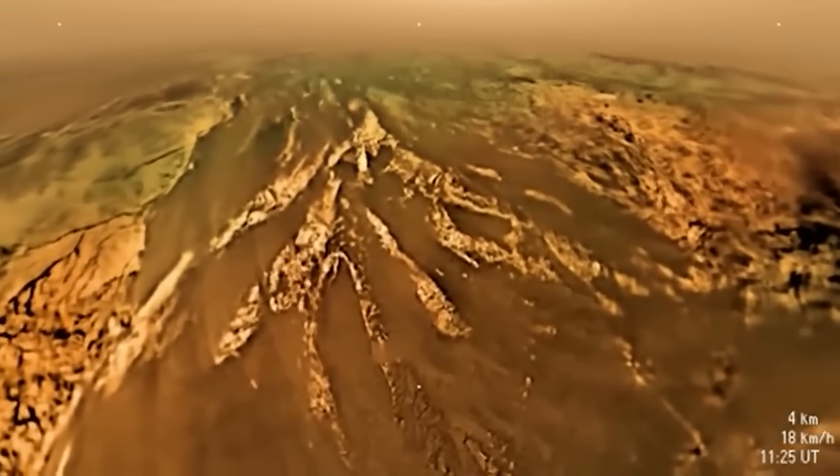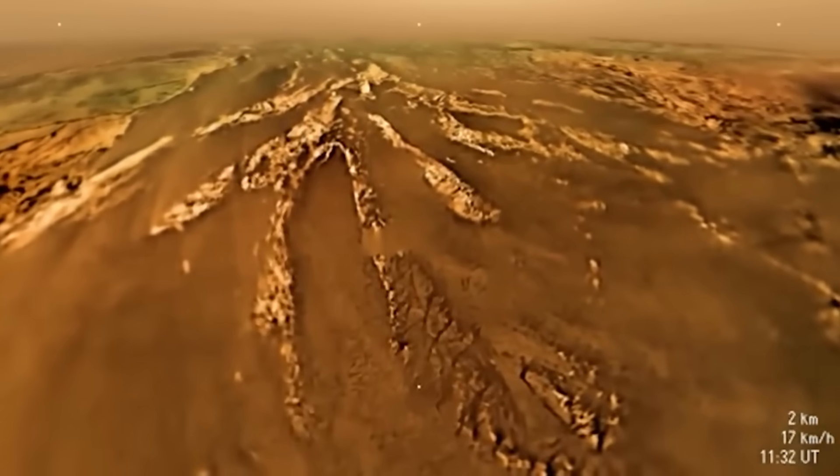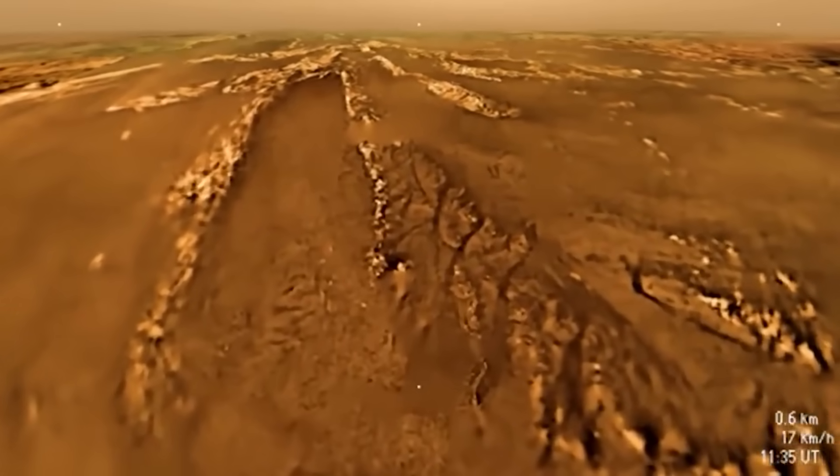Huygens is coming down right into the middle of that dark area, and as it approaches the surface, we can start to see that there is no liquid here. It's actually landing in a dried up riverbed.